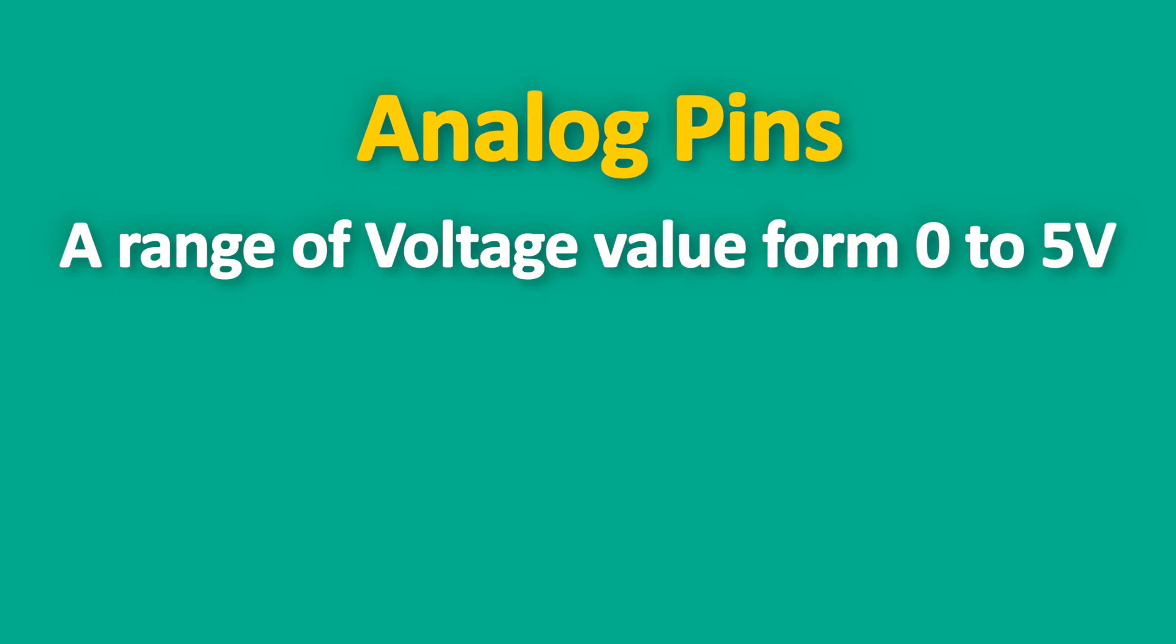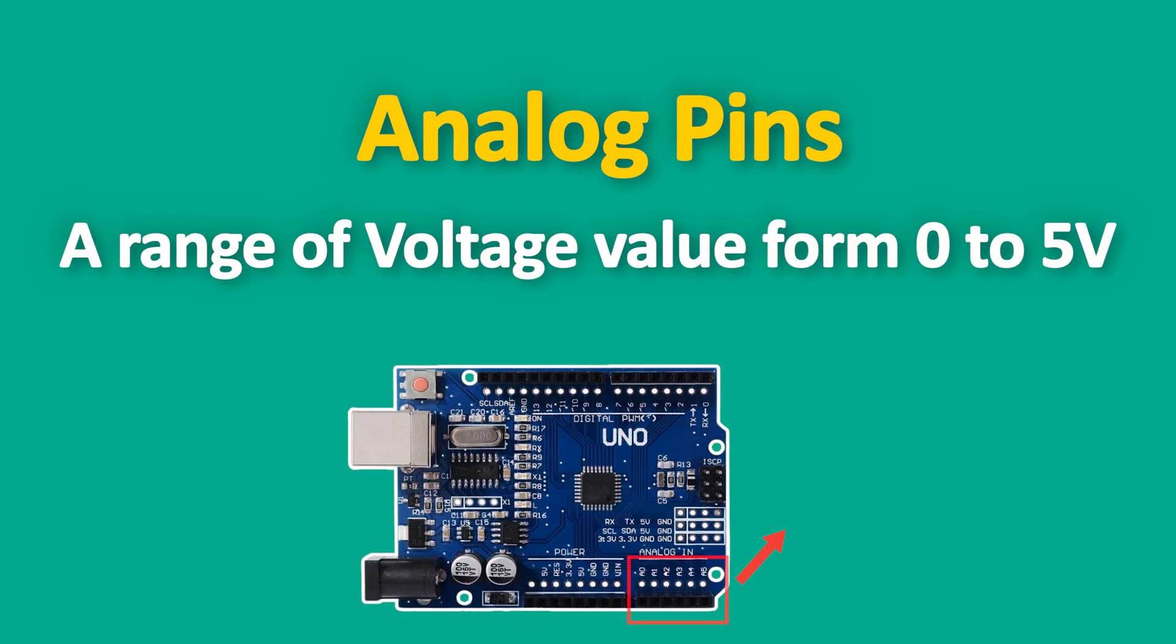Now let's talk about analog pins on Arduino. Analog pins, on the other hand, can read a range of voltage values from 0 to 5 volts. This allows them to detect varying inputs like the position of a potentiometer or reading from an analog sensor. They provide a value between 0 and 1023 representing the input voltage level.